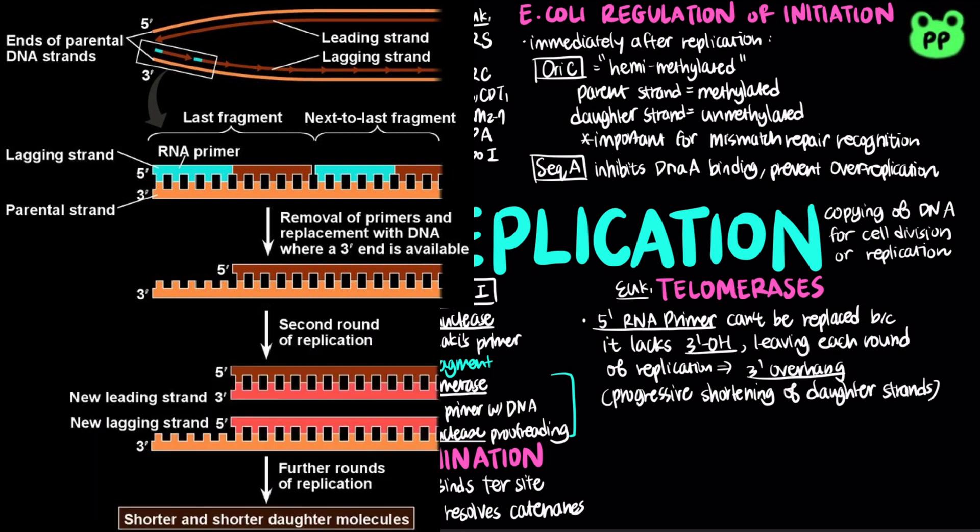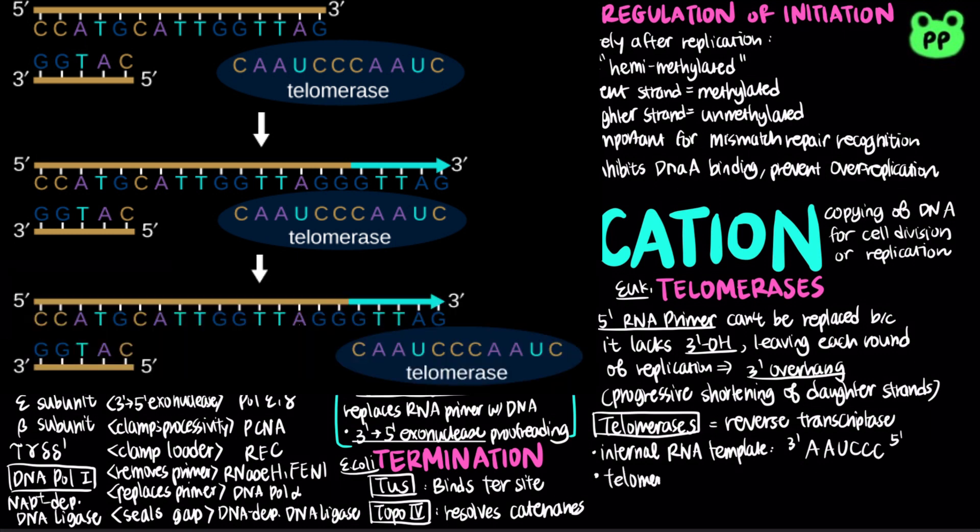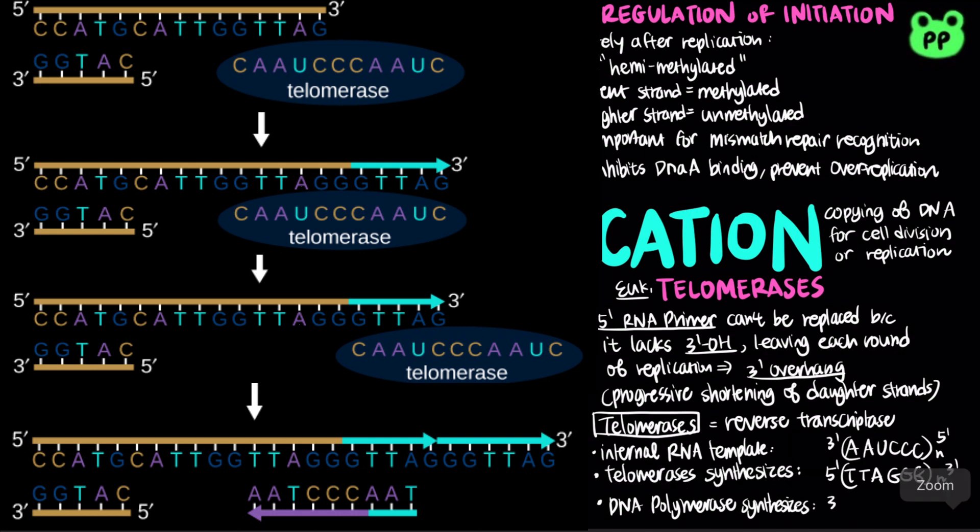To cope with this problem, the enzyme telomerase catalyzes the lengthening of a repeating sequence known as the telomeres. Telomerase is a reverse transcriptase that contains both RNA and protein. The RNA contains CA-rich repeat, that acts as an internal template for the synthesis of TG-rich strand of the telomere. Repositions of the template RNA allow addition of more TG residues. After extension of TG strand by telomerase, DNA polymerase synthesizes complementary CA strand.